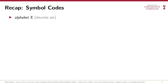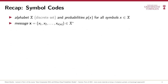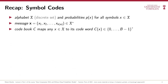We considered a discrete alphabet X that contains all symbols that we might want to compress, and we assumed a simple probabilistic model where each symbol x occurs with some probability P. The messages that we want to encode are sequences of symbols from this alphabet, noted as boldface X. A symbol code is then specified by a codebook C that assigns a codeword to each symbol in the alphabet, and these codewords are variable-length binary bitstrings.